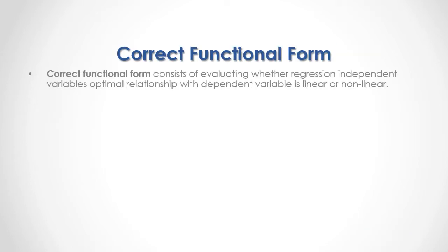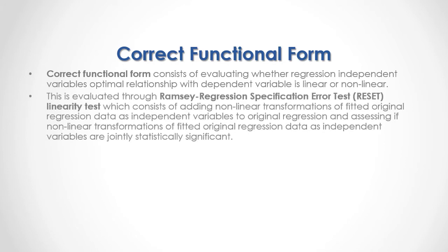Correct functional form consists of evaluating whether the regression independent variable's optimal relationship with the dependent variable is linear or nonlinear. This is evaluated through the Ramsey Regression Specification Error Test, or Reset Linearity Test, which consists of adding nonlinear transformations of fitted original regression data as independent variables to the original regression, and assessing if those nonlinear transformations are jointly statistically significant.